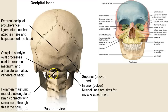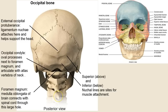Our skull weighs about as much as a bowling ball, so the atlas has a big job. The foramen magnum is where the medulla oblongata of the brain attaches to the spinal cord. The superior and inferior nuchal lines are where many muscles like the trapezius pull from.